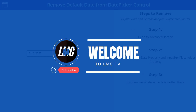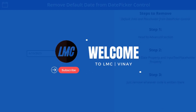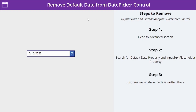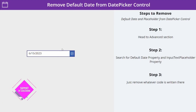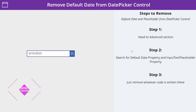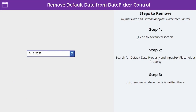Hi everyone, welcome to Last Minute Coders. My name is Vinay. In this video we are going to learn how we can remove the default date from a date picker control. By default it contains today's date. The steps are: head over to the Advanced section, search for the Default Date property and the Input Text Placeholder property, then remove the code written there.